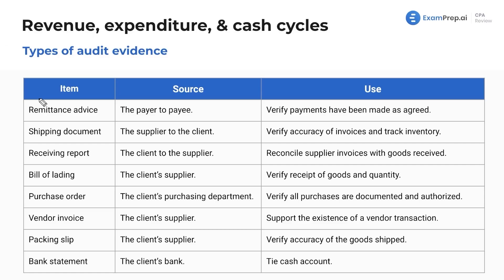Let's start with the remittance advice. The source of this document is from the payer to the payee. So if I buy something, I am the payer, and I'm sending it to the person I bought whatever this is from. The use of this document is to verify that payments have been made as agreed.